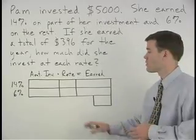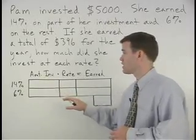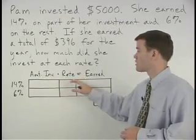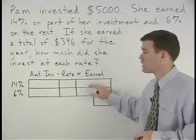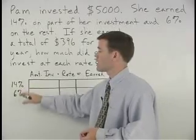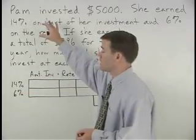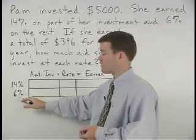I would start this problem by setting up a chart based on our formula: amount invested times rate of interest equals interest earned. Down the left side of the chart, we have the two different types of investments that Pam makes, the 14% investment and the 6% investment.